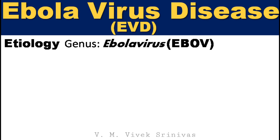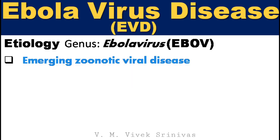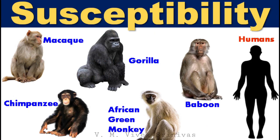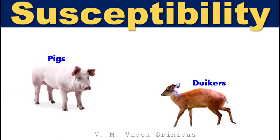This disease is caused by the genus Ebolavirus of the family Filoviridae. This is an emerging zoonotic viral disease characterized by fatal hemorrhagic fever affecting humans and non-human primates. The susceptible hosts for this virus are macaques, chimpanzees, gorillas, African green monkeys, baboons, and humans. This virus also infects pigs and duikers.